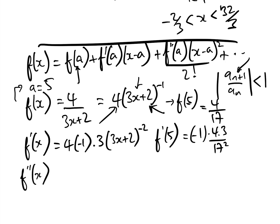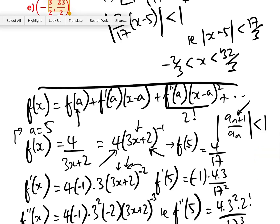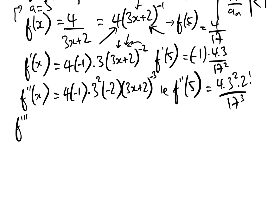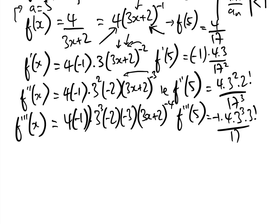Differentiating again, f''(x) equals 4 times minus 1 times 3 squared times minus 2 times (3x plus 2) to the minus 3, so f''(5) equals 4 times 3 squared times 2 factorial over 17 cubed. Then f'''(x) equals 4 times minus 1 times 3 cubed times minus 2 times minus 3 times (3x plus 2) to the minus 4, so f'''(5) equals minus 1 times 4 times 3 cubed times 3 factorial over 17 to the 4.